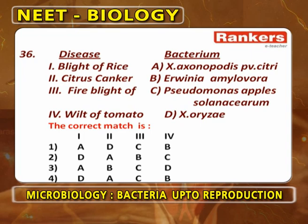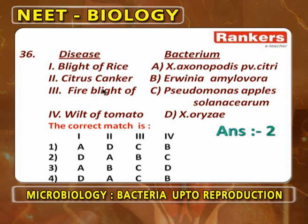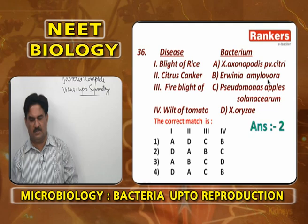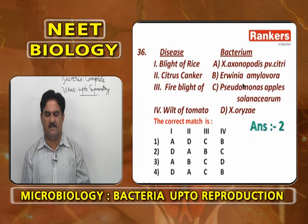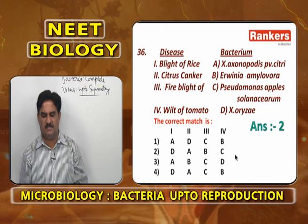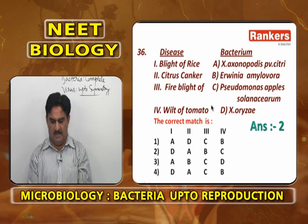Matching: Blight of rice is by Xanthomonas oryzae. Citrus canker is by Xanthomonas axonopodis pv. citri. Fire blight of apples is by Erwinia amylovora. Wilt of tomato is by Pseudomonas solanacearum. So the correct match is: 1-D, 2-A, 3-B, 4-C.